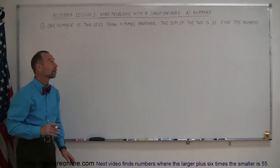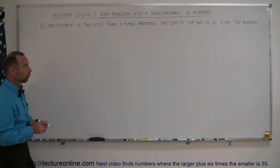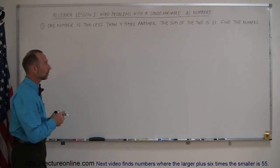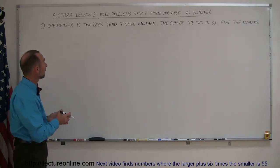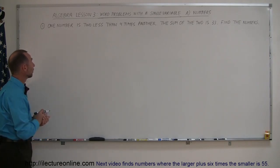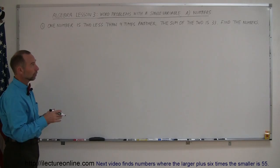Welcome to our lecture online, and here's lesson number three in algebra, word problems with a single variable. We're going to start off with word problems with numbers, and here's our first example. We have one number is two less than four times another number. The sum of the two is 33. Find the numbers.